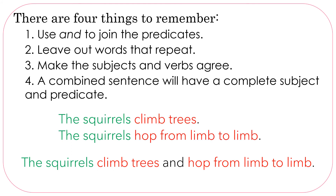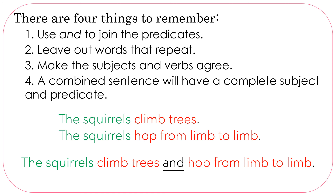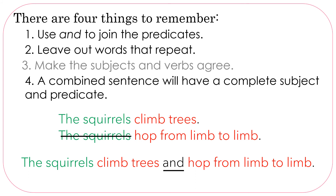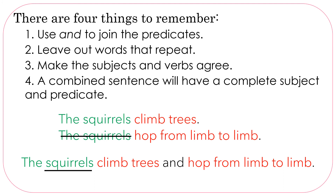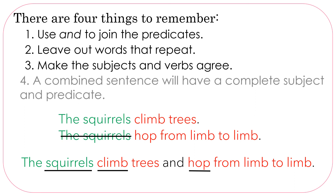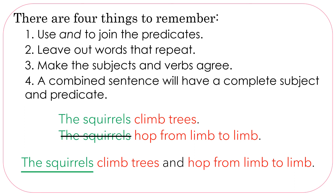Did we follow our rules again? Use AND to join the predicates — yes, we used AND. Leave out words that repeat — we didn't use 'the squirrels' the second time. Make the subjects and verbs agree — 'the squirrels' is the subject; climb and hop are the verbs and they're both plural because they don't have S's. And a combined sentence will have a complete subject and predicate: 'the squirrels' is the subject; 'climb trees and hop from limb to limb' is a complete predicate.